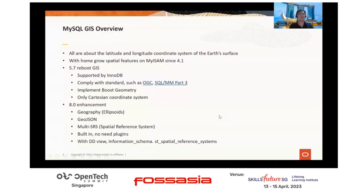GIS — the full name is Geographic Information System — is a set of coordination systems with longitude and latitude to deal with information of the Earth's surface.